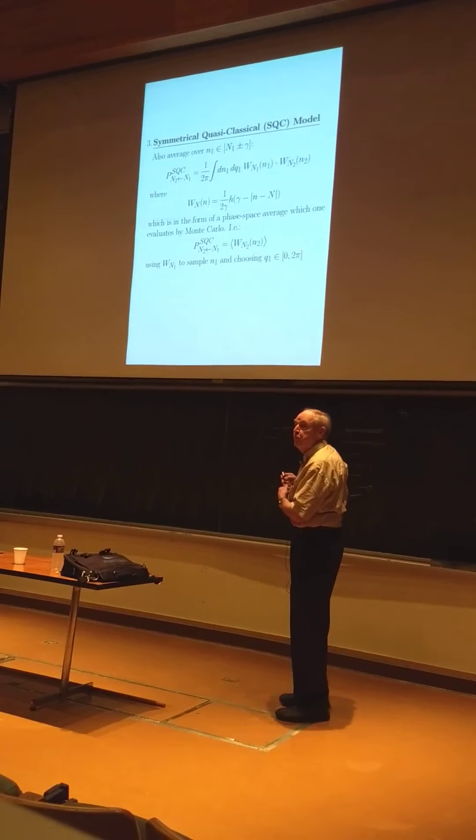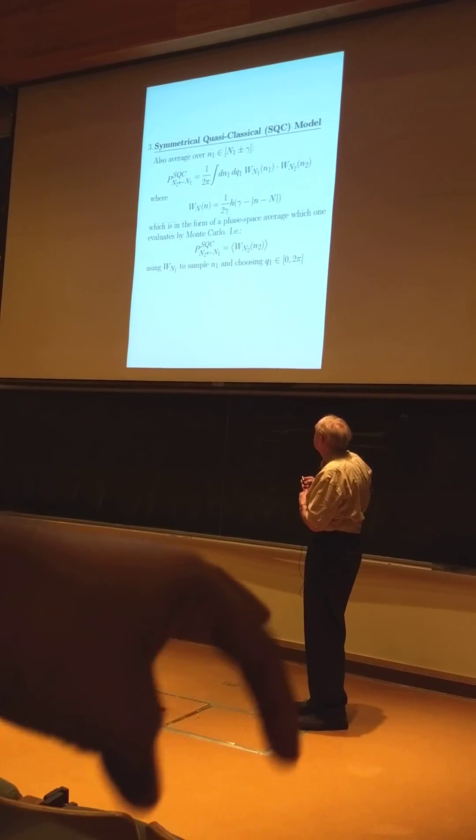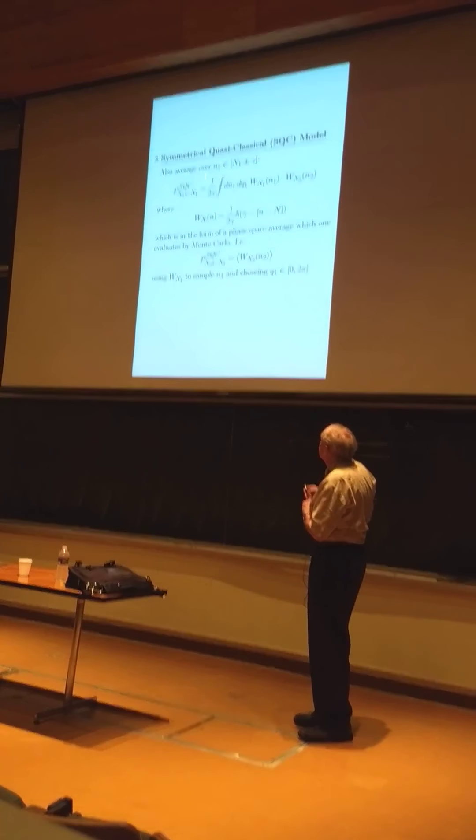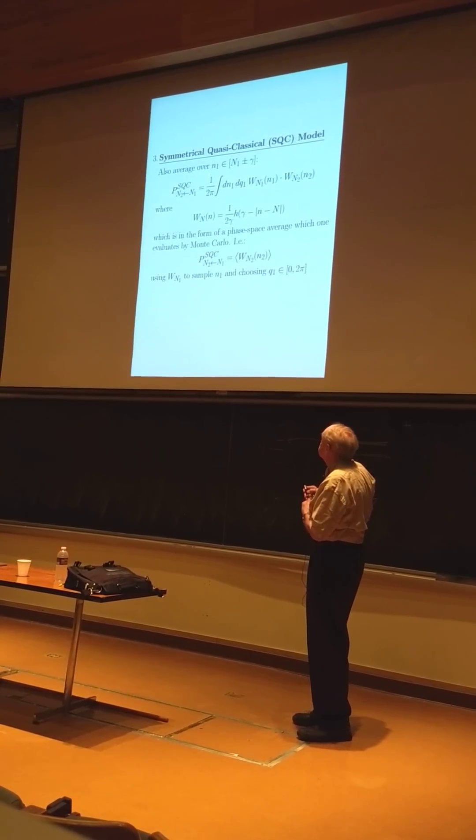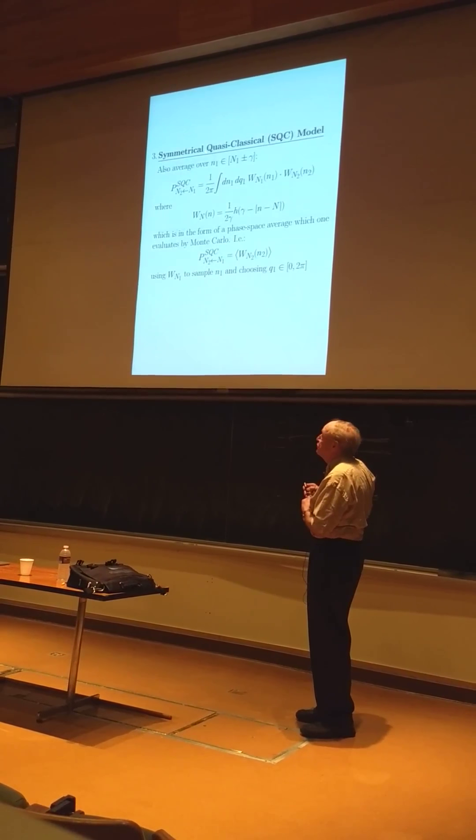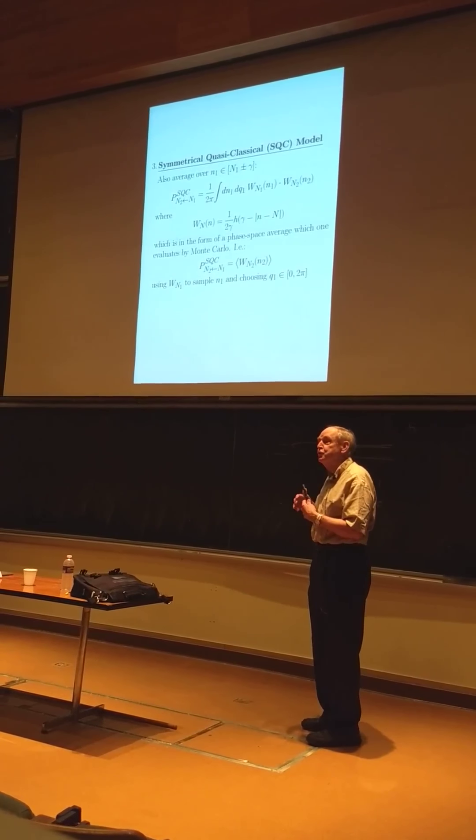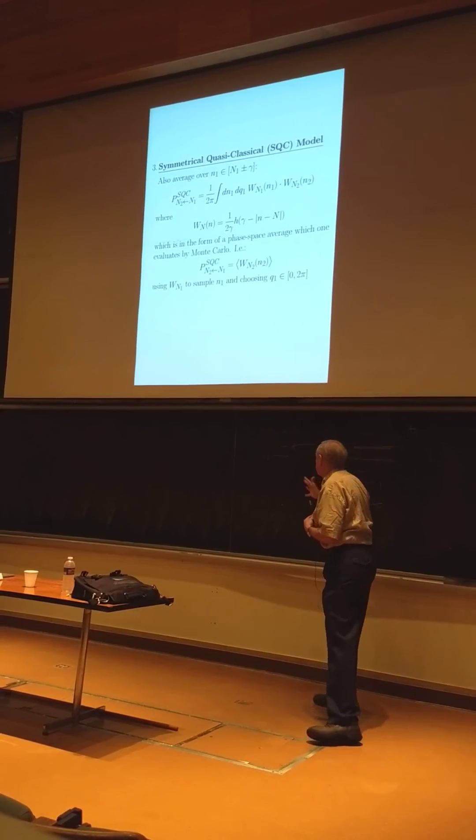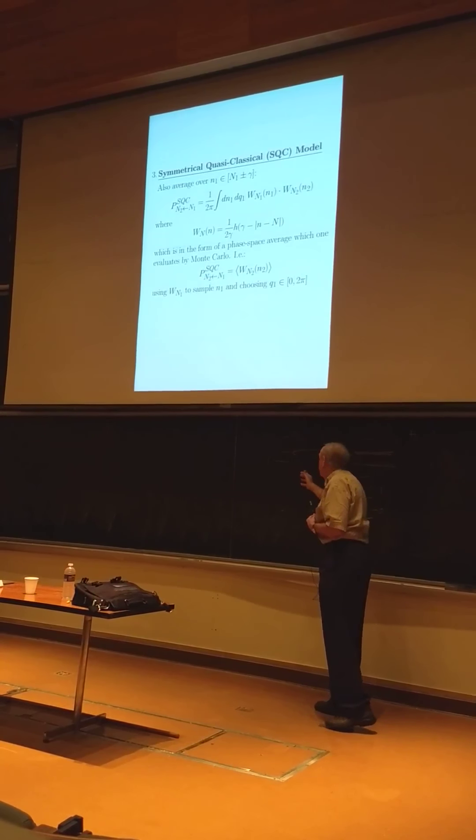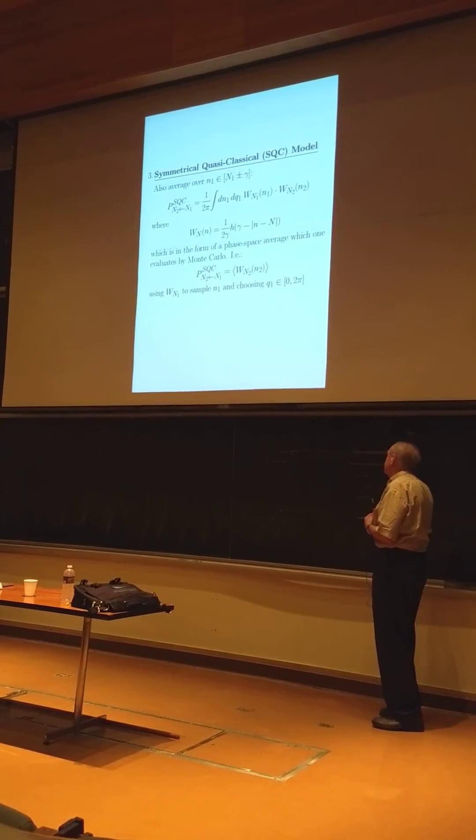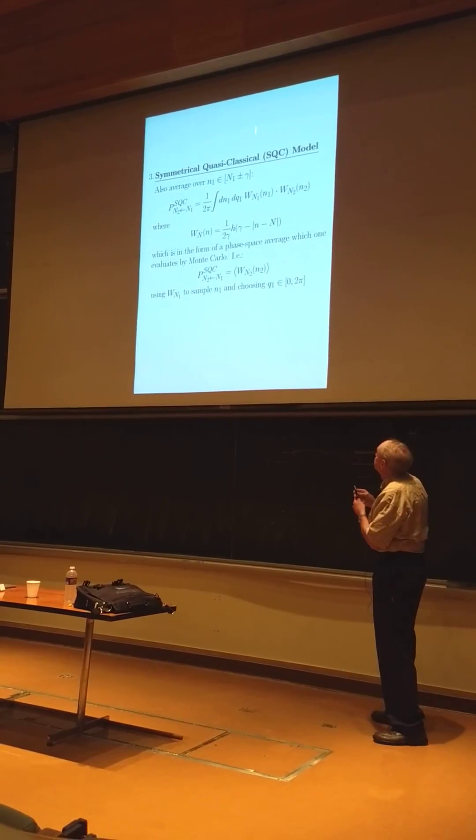It picks out the range of initial ends around its integer value. So now, if we put h-bar back in the problem, this would be 2π h-bar. And you recognize this as a phase-space average. And phase-space averages are manifestly invariant to when you do them.